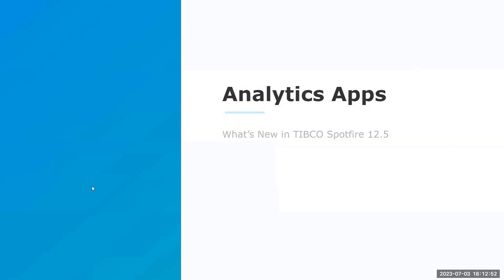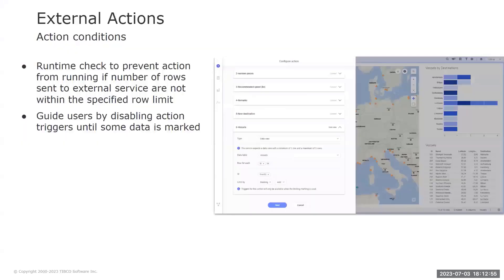Let's see analytic apps. When configuring data view parameters of a standard action, you will now see information about any existing row limits directly in the configure action flyout. When triggering an action, you will be prevented from running it if the number of rows are not within the specified row limit range. Additionally, an action that works on marked data can be grayed out until some data is marked, guiding the user to trigger the action in the right context.